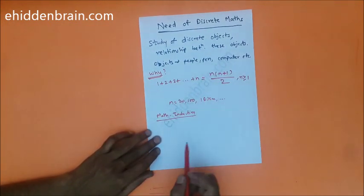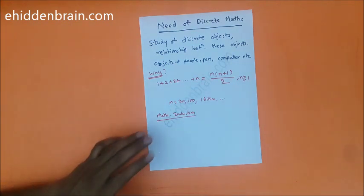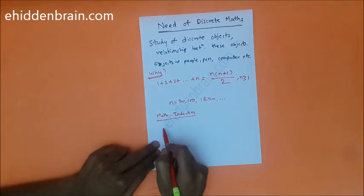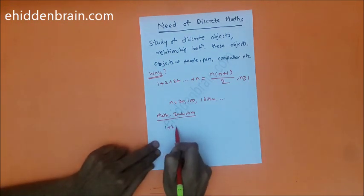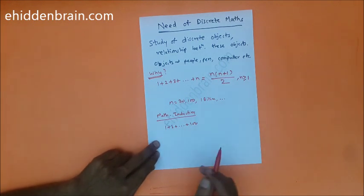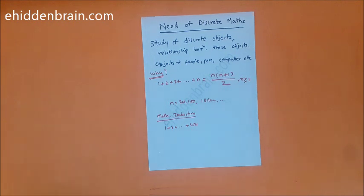Let me show you in a practical way how this formula was generated. This formula was generated by Gauss when he was a primary student. His teacher asked students to calculate the sum of first hundred numbers because the teacher was a little bit lazy and wanted to sleep.